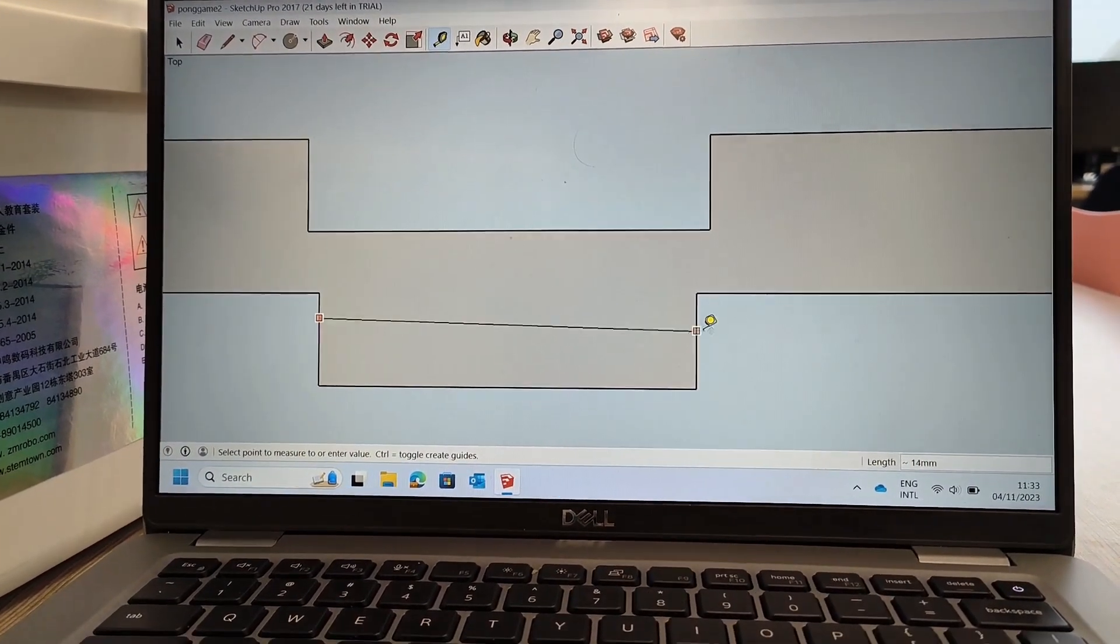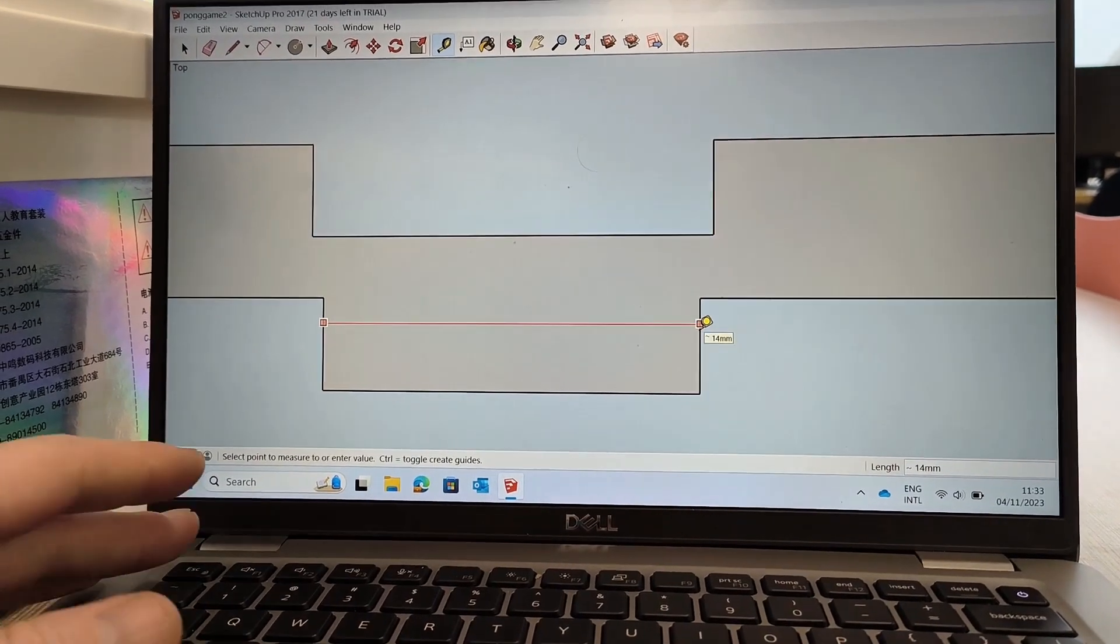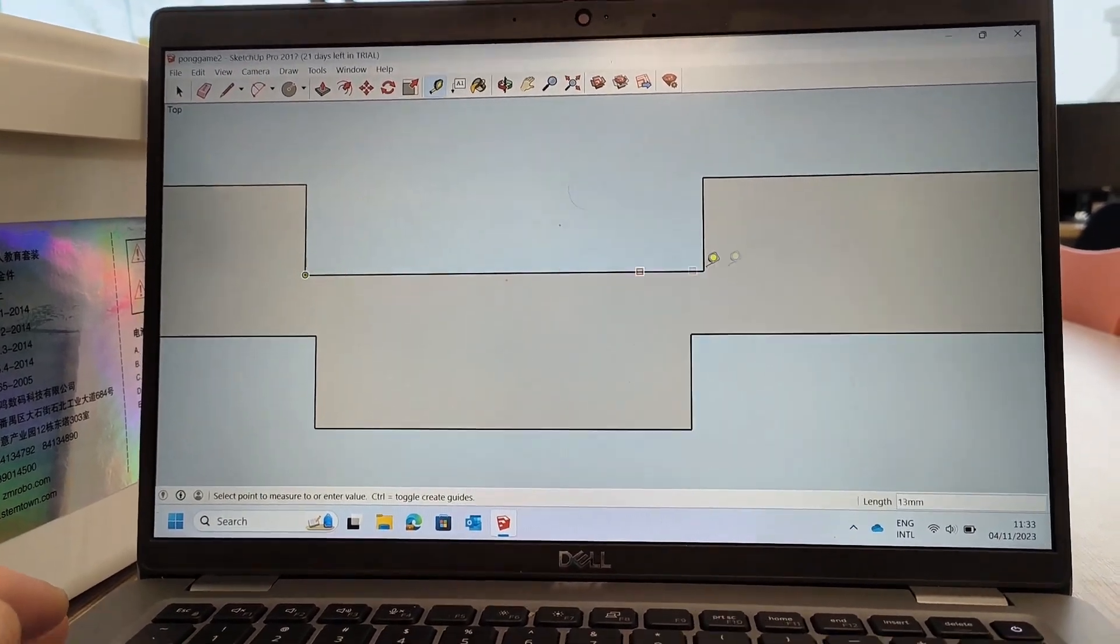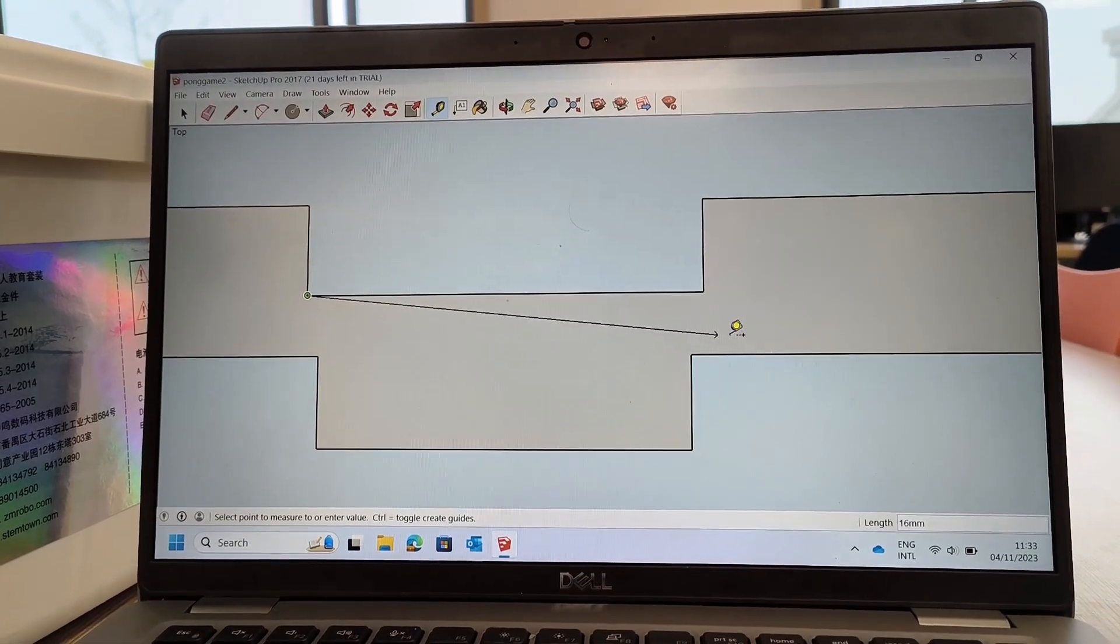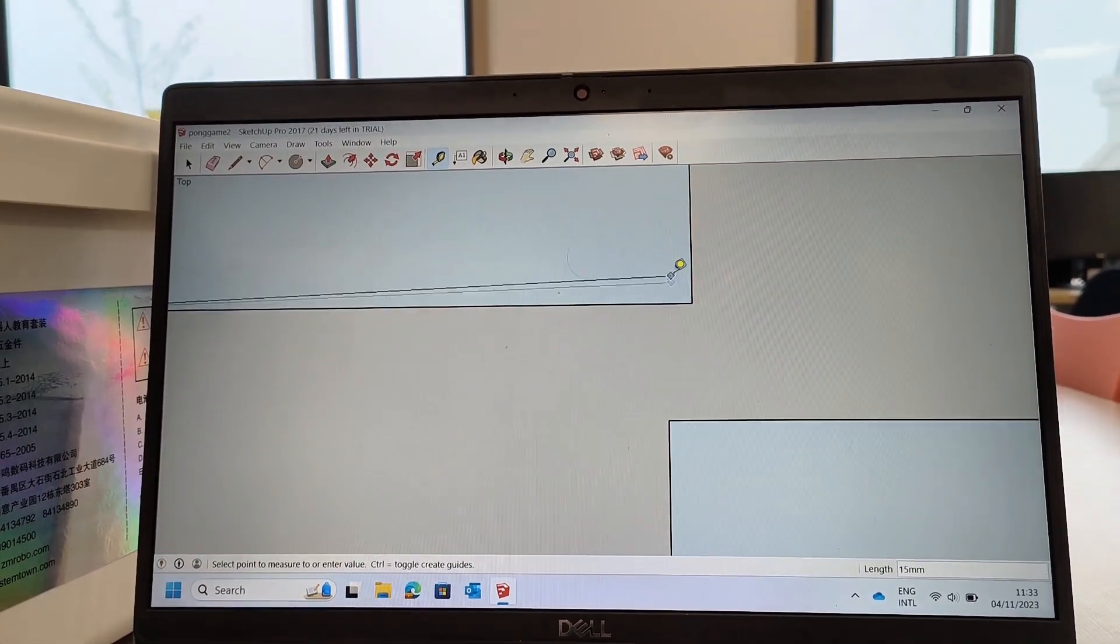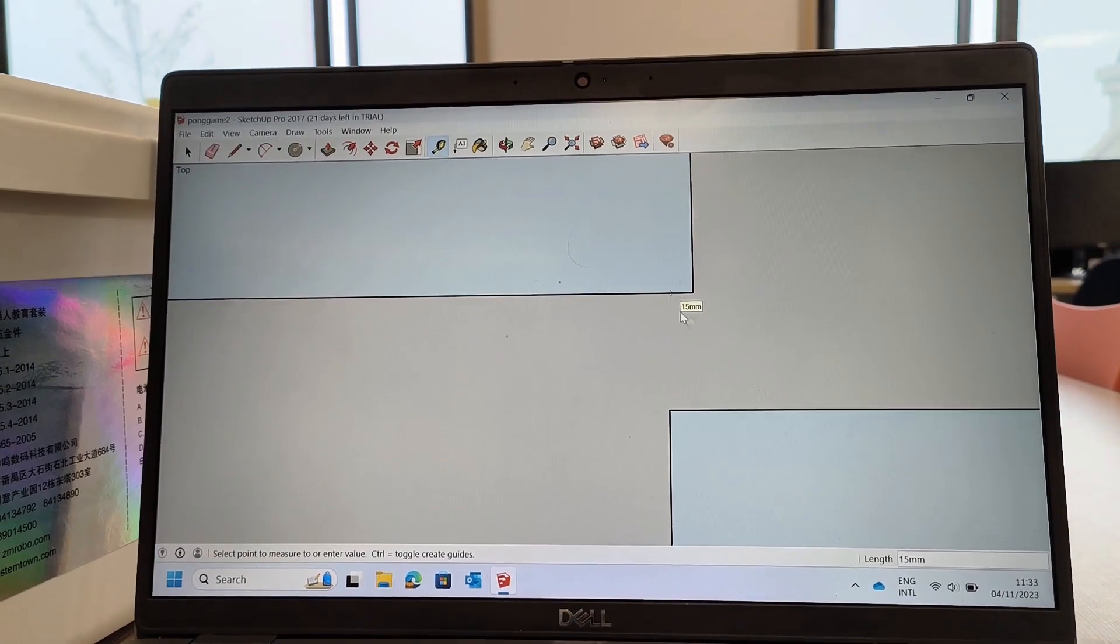When you're designing your design here, for these little grooves, you want to make them a little bit wider. So this is about 14 millimeters and this is about 15, so it's about one millimeter difference, because we have to account for the laser width. Otherwise it won't be a snug fit.